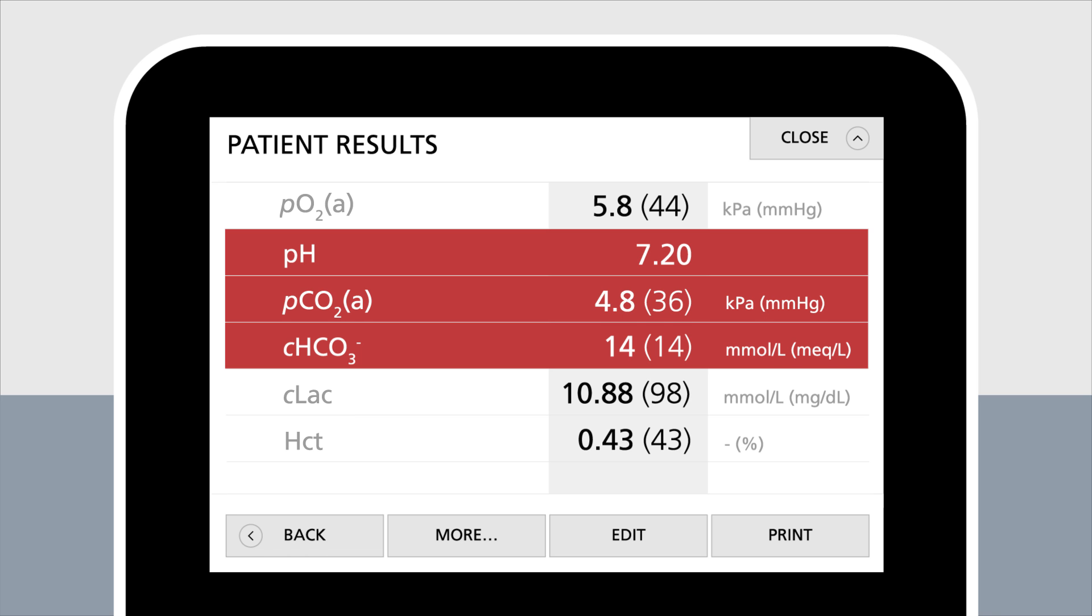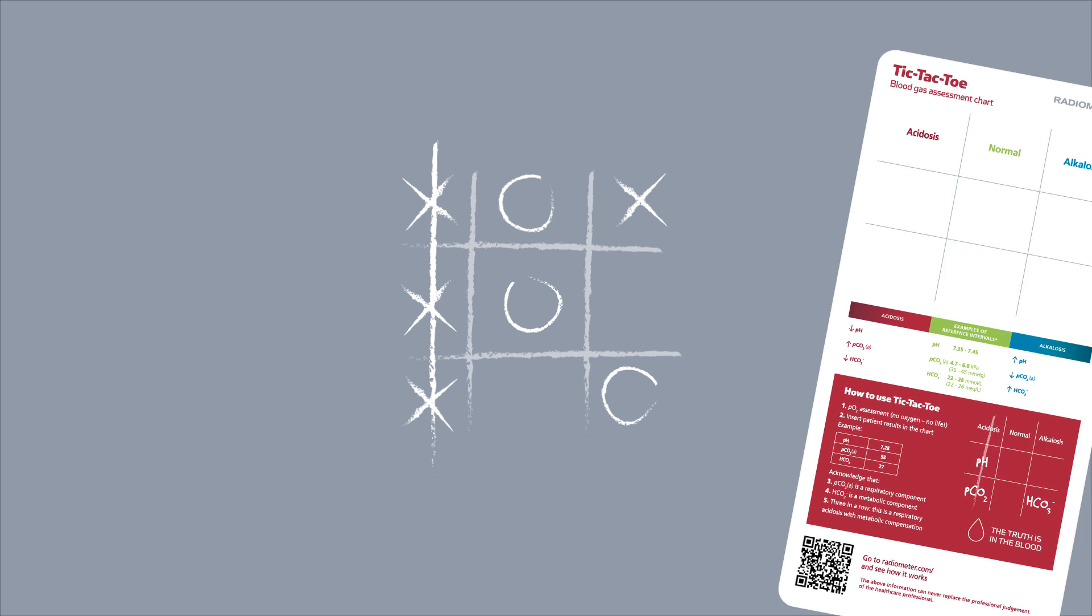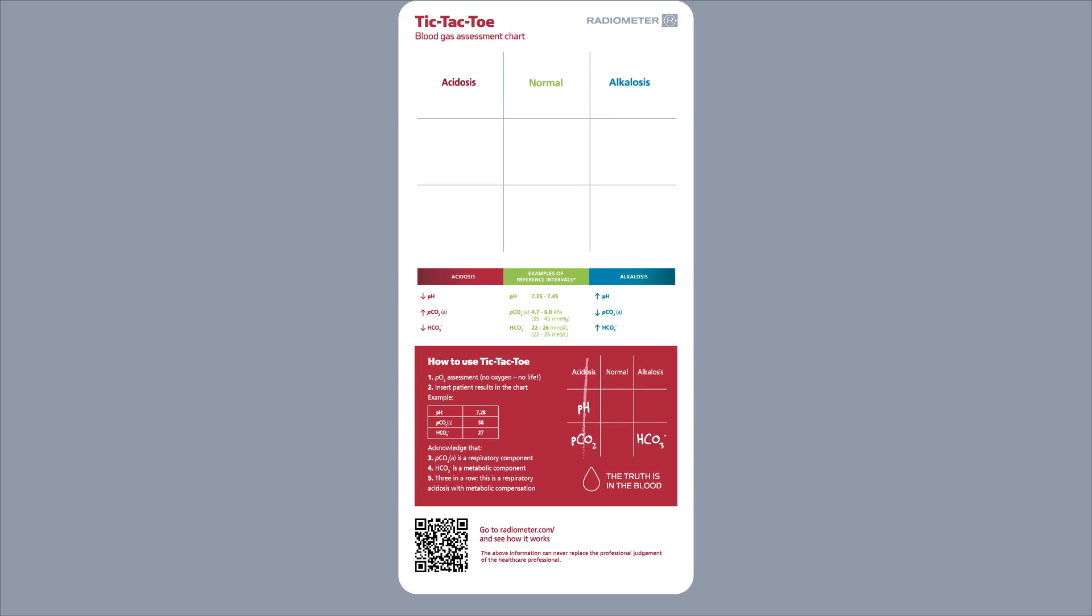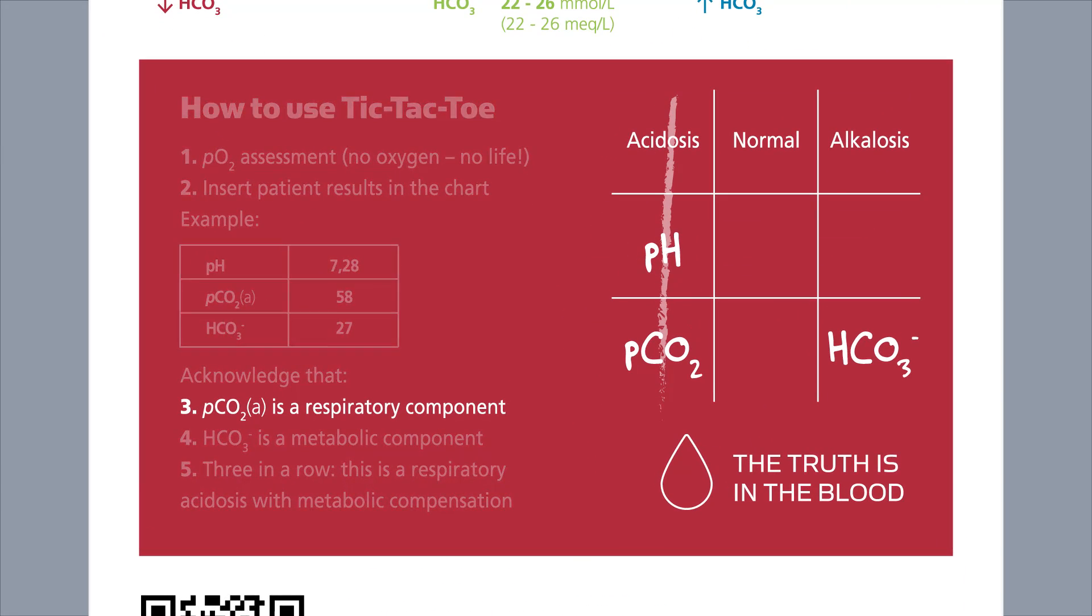A clever way to interpret these results is to use a method we call tic-tac-toe. The name refers to the old game where the goal is to get three in a row in a 3x3 grid. You may use the tic-tac-toe pocket card shown in this video. Before you start, note that PCO2 is a respiratory component, whereas bicarbonate is a metabolic component.